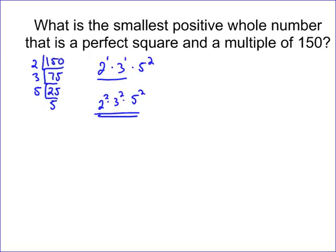This is a perfect square, and this has that as a factor, meaning it's a multiple of that. So 2 squared times 3 squared times 5 squared is a multiple of 150, because 2 times 3 times 5 squared could be factored out of that.